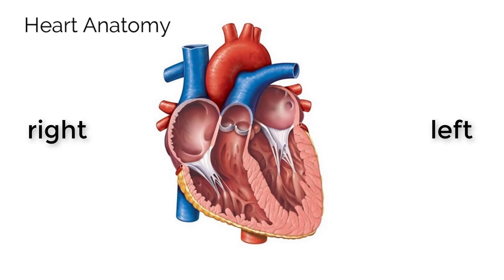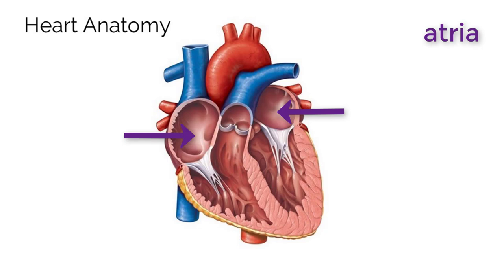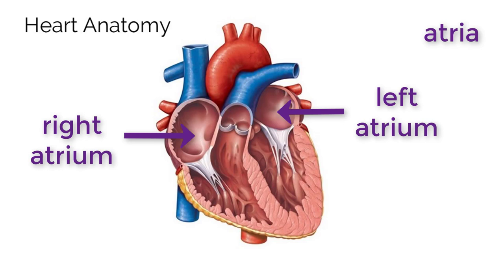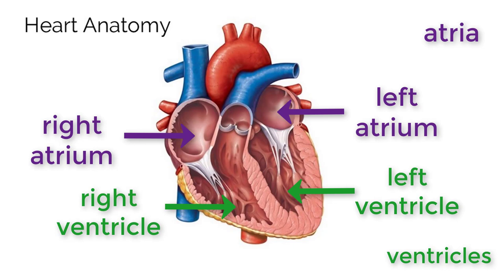Now let's label the important structures, starting with the four chambers of the heart. The upper chambers are called atria, or singular atrium — here we have the right atrium and on the opposite side the left atrium. Below the atria are two lower chambers called ventricles: the right ventricle and the left ventricle. The two sides of the heart are separated by thick tissue called the septum.